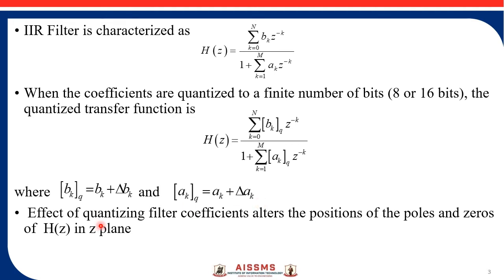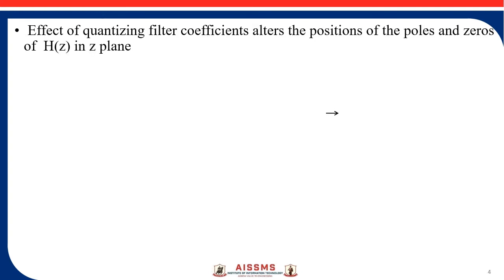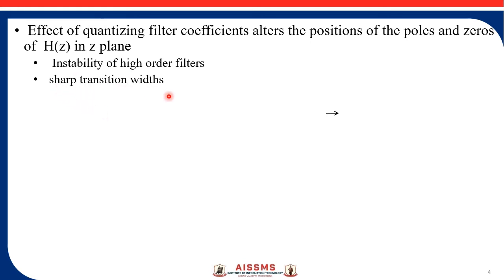When we quantize this filter coefficient due to the limitation of the register capacity, what will happen? The position of the poles and zeros of the system function in the z-plane will change. When the position of poles and zeros will change, the filters may become unstable, there will be sharp transition widths and poles will become close to the unit circle.